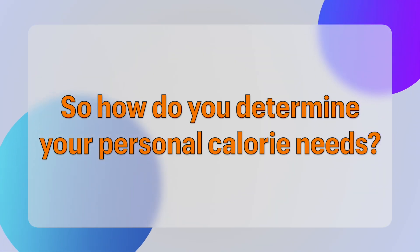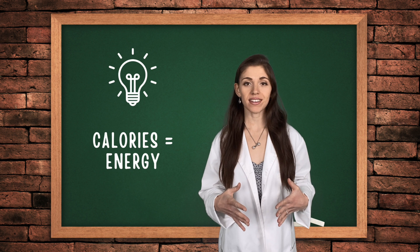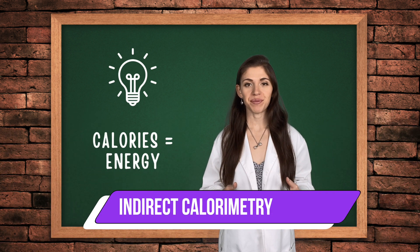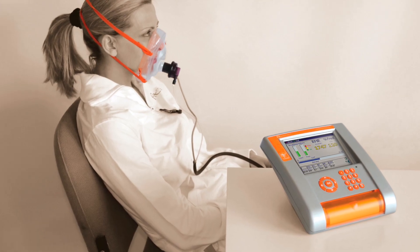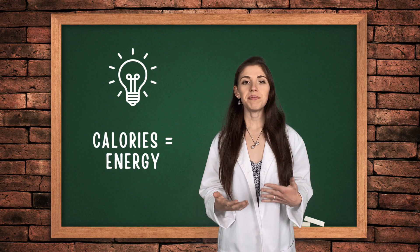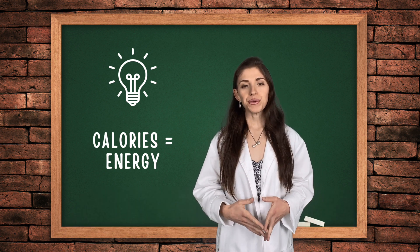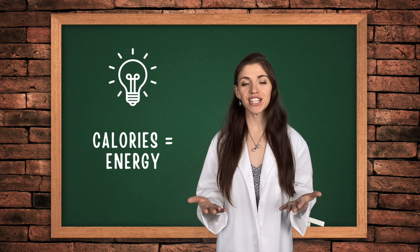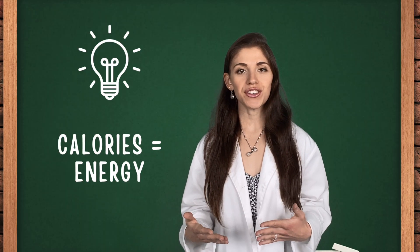So how do you determine your personal calorie needs? Well, energy needs are actually determined through a very expensive process known as indirect calorimetry. This would be performed in a clinical setting and the subject would be hooked up to a machine that measures something known as their respiratory quotient. Basically it measures the amount of oxygen used and the amount of carbon dioxide released during breathing. The RQ tells us which nutrients are being used for energy and therefore tells us how many calories someone's body burns and how many calories they need to survive. However, as I mentioned, this method is very expensive and not practical for the average Joe.